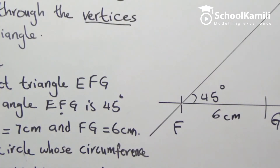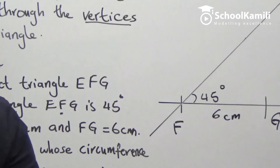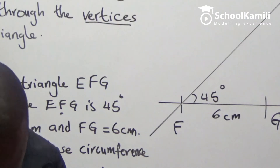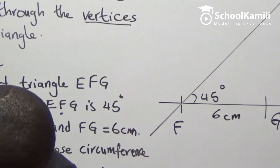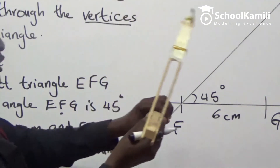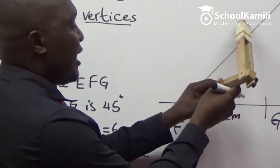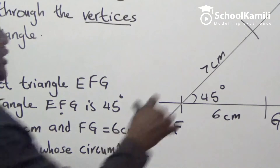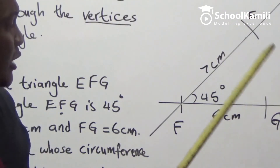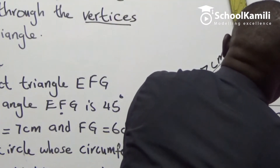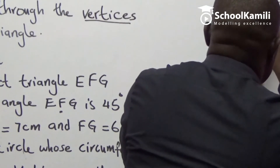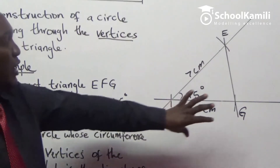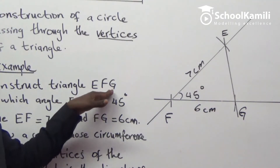Then measure 7 cm from F to E. Take your compass, put it on your ruler, and measure 7 cm. Put the compass point at point F and make an arc on that line — this distance is 7 cm, which gives us point E. Now join point E to point G. After joining those two points, you have constructed triangle EFG.